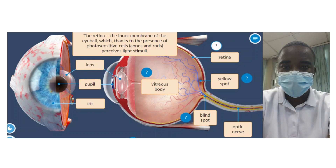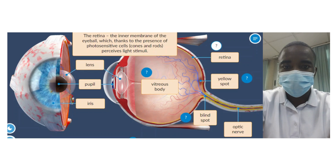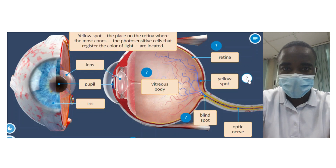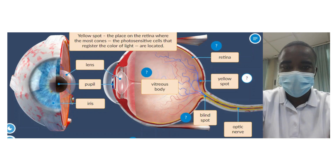The retina is the inner membrane of the eyeball that contains photosensitive cells called cones and rods. These cells perceive light stimuli and convert them into electrical signals that are sent to the brain. The simulation introduces students to the structure and function of the retina, explaining how it plays a vital role in the process of vision.